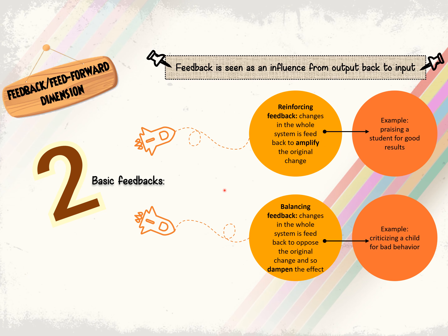The third dimension is the Feedback and Feed-forward Dimension. Feedback is seen as influence from output back to input. There are two basic types: reinforcing feedback, where changes in the system are fed back to amplify the original change — for example, praising a student for good results increases their motivation, they put in more effort, and get better results. Balancing feedback opposes the original change — for example, criticizing a child for bad behavior leads them to behave better.